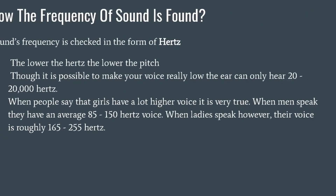So, how is the frequency of sound found? Sound's frequency is measured in Hertz. The lower the Hertz, the lower the pitch. Your ear can only hear 20 to 20,000 Hertz. When people say that girls have a much higher voice, it is very true. The average Hertz for a man is 85 to 150 Hertz — that's really low. But when women speak, their voice averages 165 to 255 Hertz.